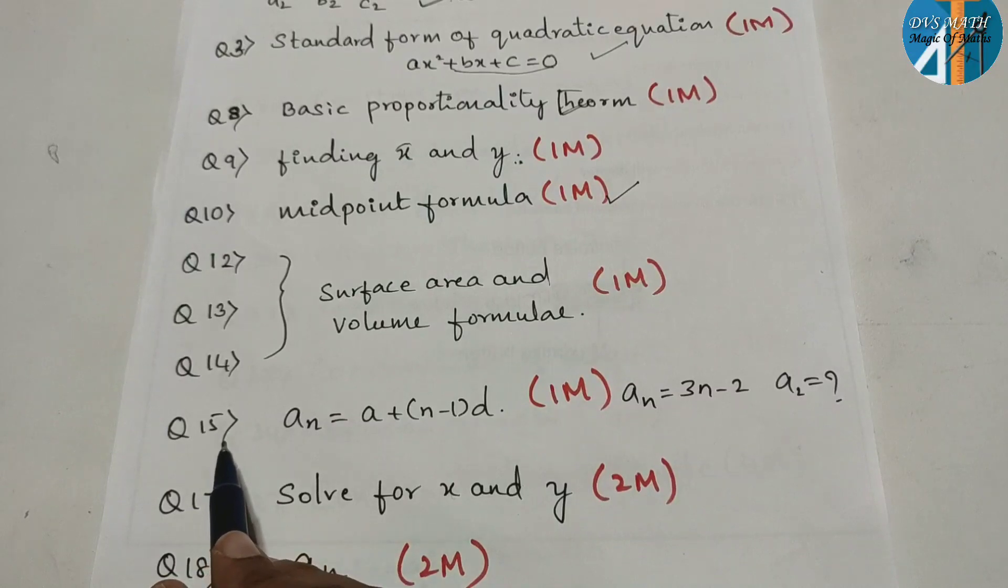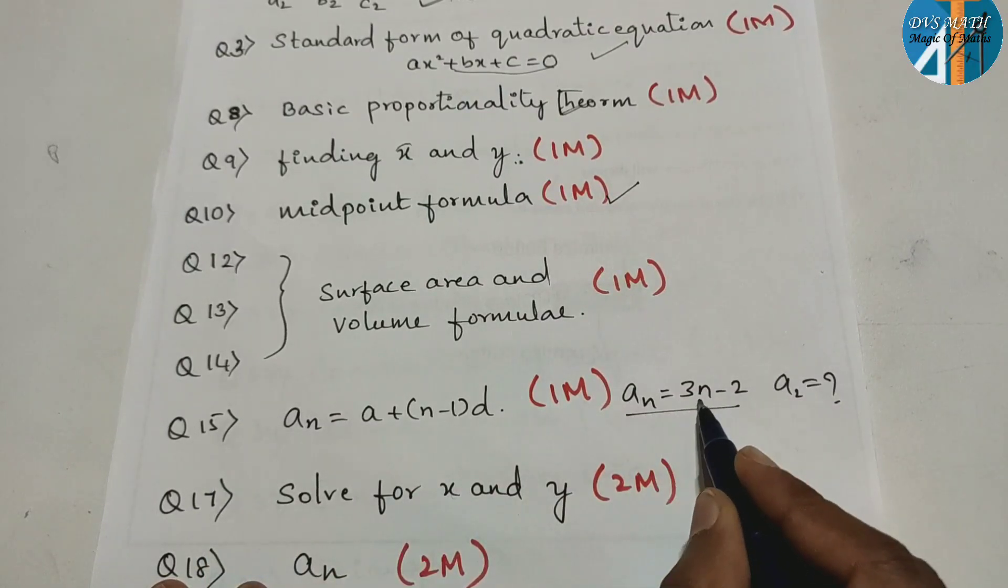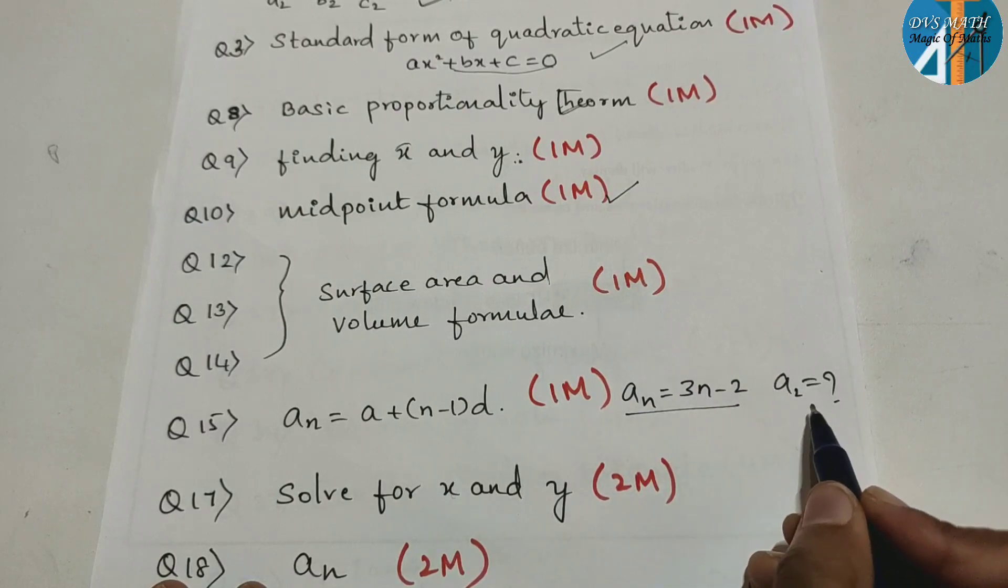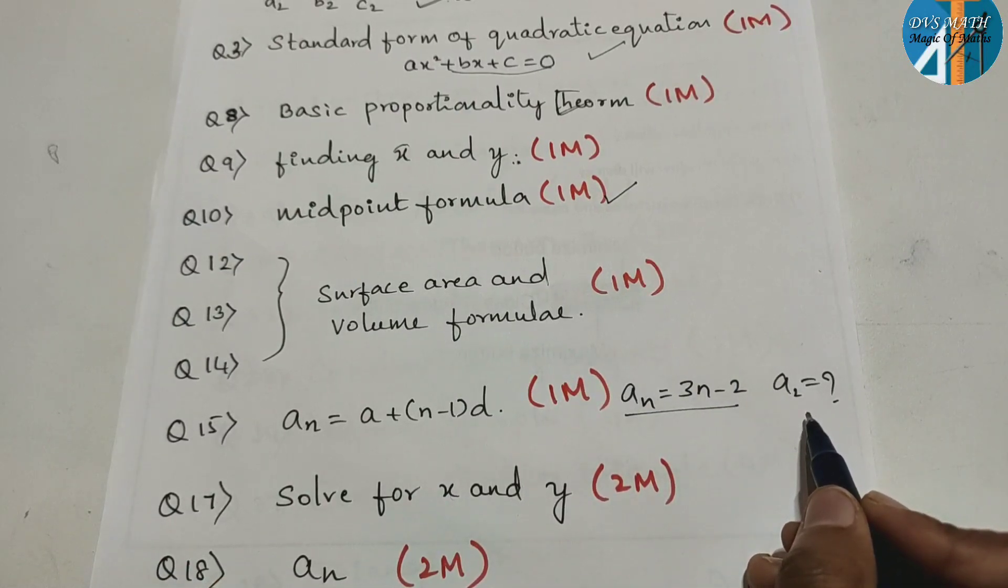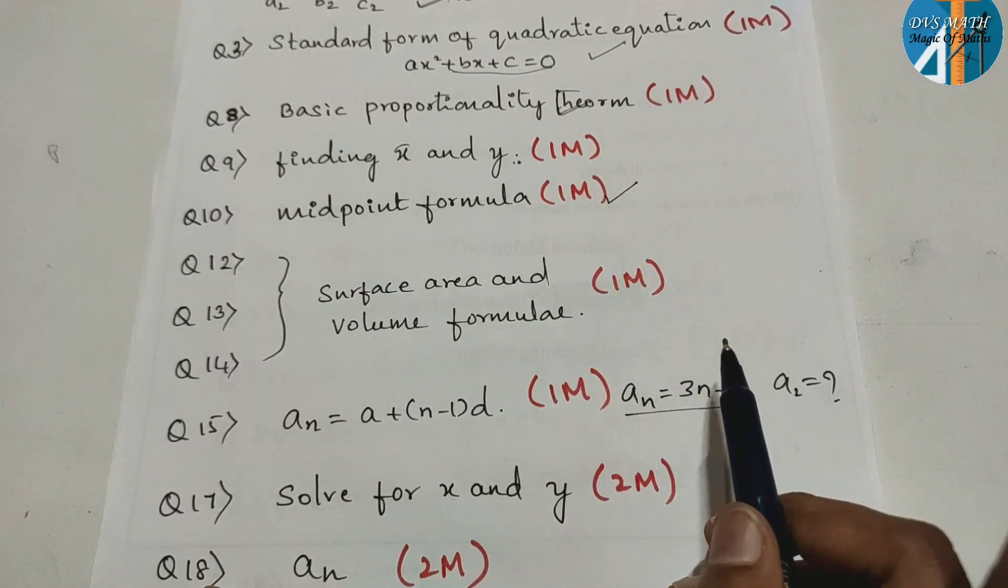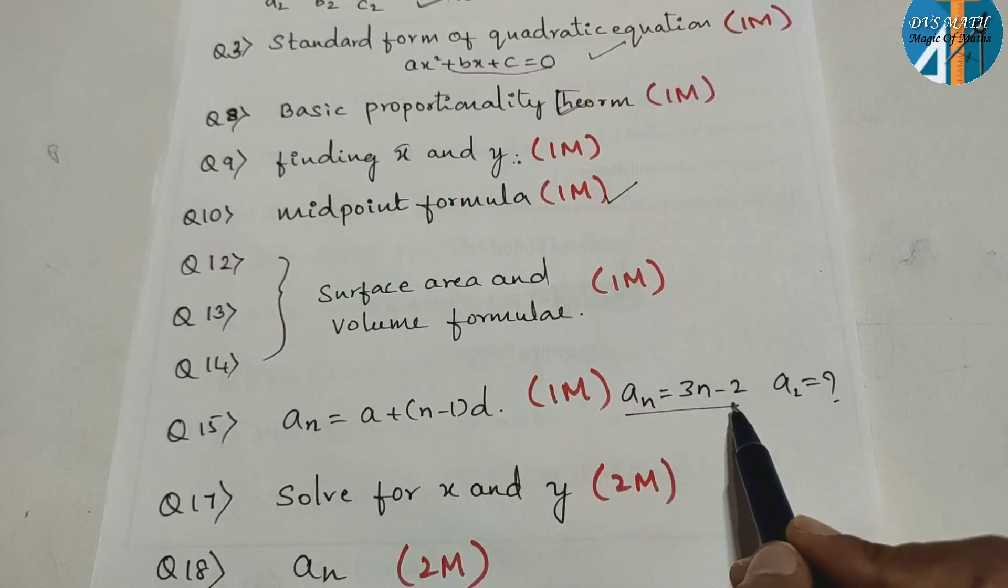Next, the 15th question. The question is an is equal to 3n minus 2, a2, a3. It is a general form. So you can write a particular term. This is the question paper. That is the first question. That is the format change.